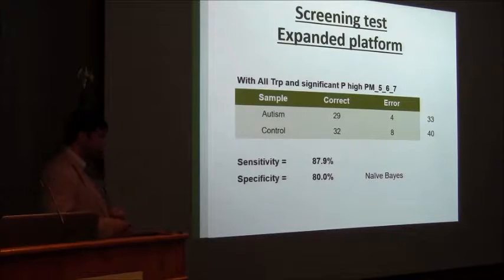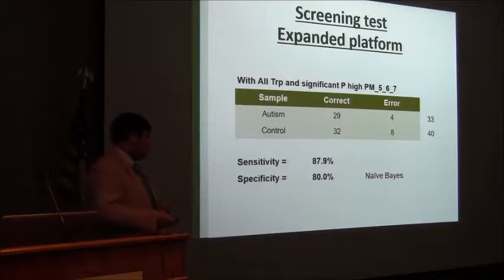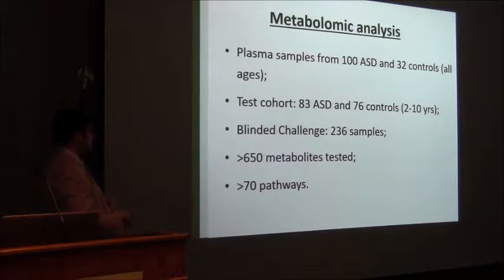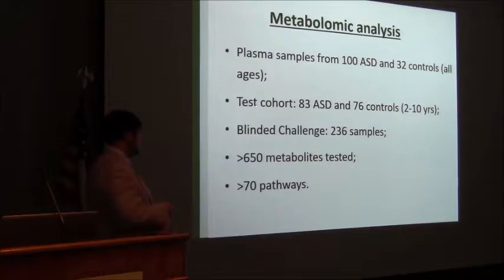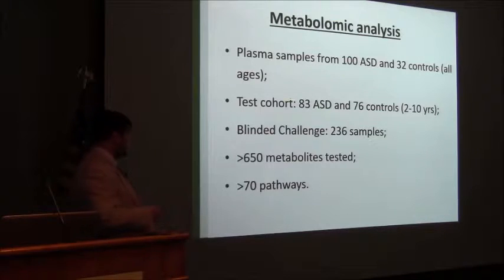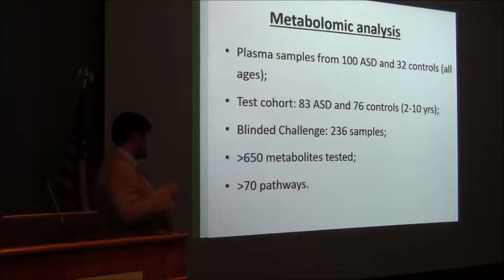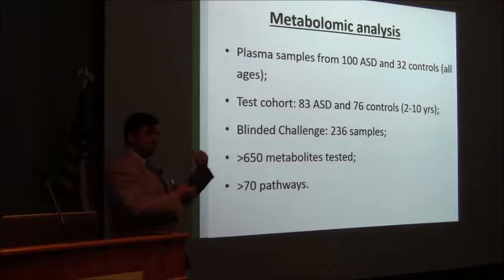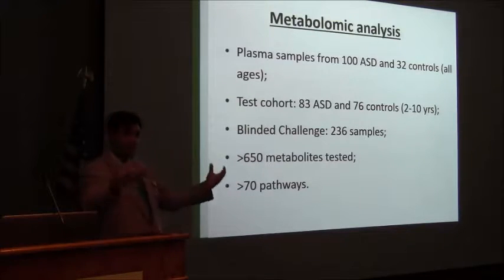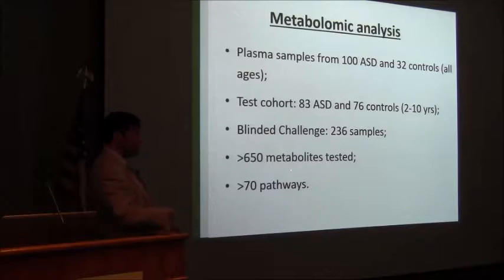In collaboration with Metabolon, they performed metabolomic analysis on different cohorts. They first started on plasma samples from 100 patients and 32 controls, then tested on 83 patients and 76 controls, and are now performing a joint analysis across all samples. This is a different approach — still looking at metabolites, but more static and more comprehensive, with more compounds and more pathways to investigate.